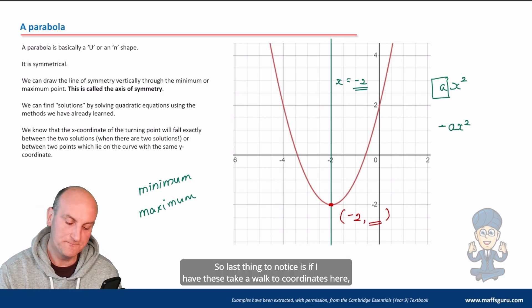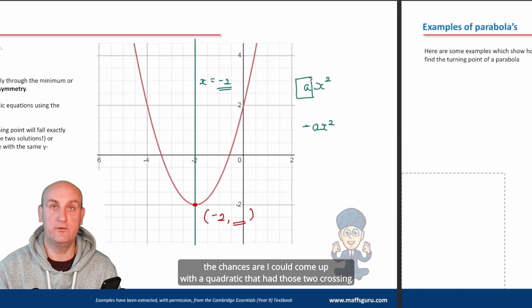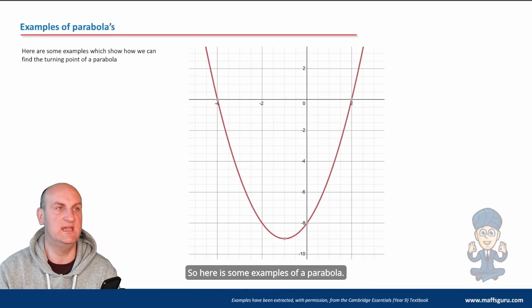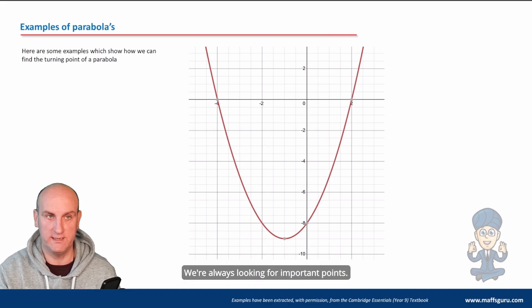Last thing to notice is if I have these two coordinates here, the chances are I could come up with a quadratic that had those two crossing points. Again we've talked that previously. Here is some examples of a parabola, let's have a look at the important points from this parabola.